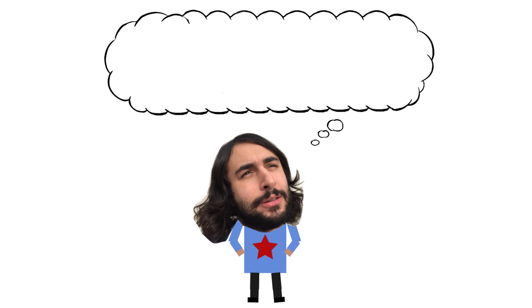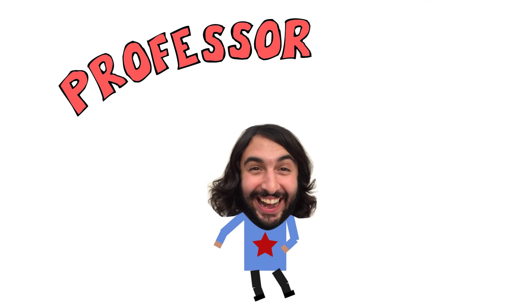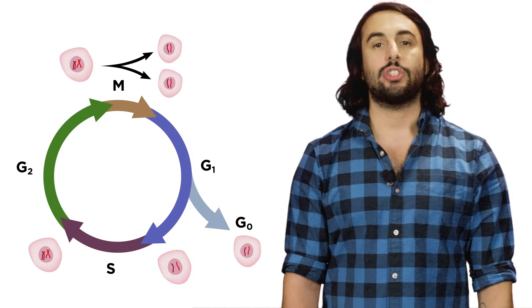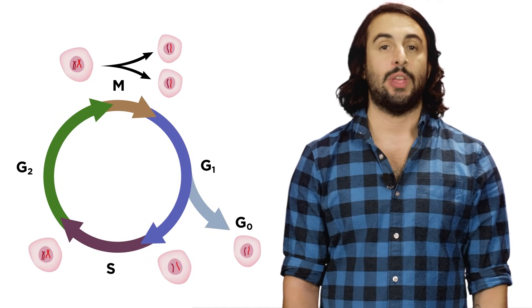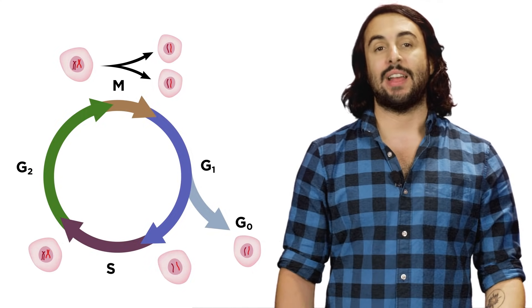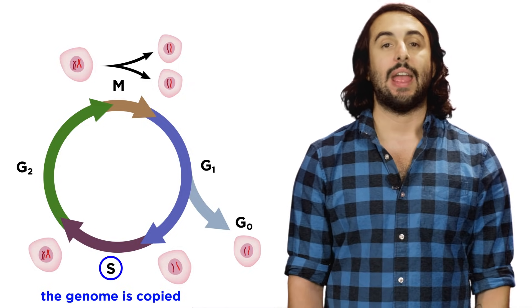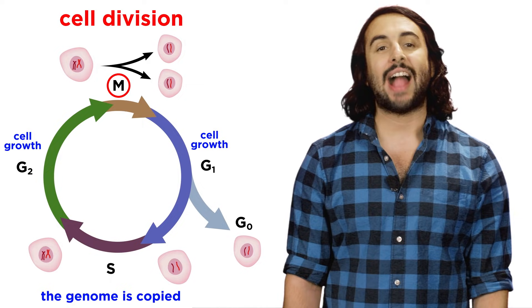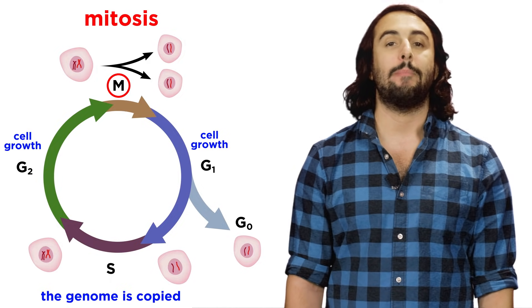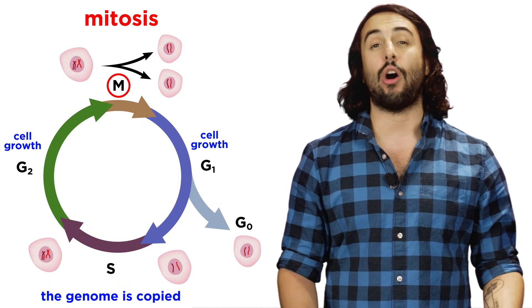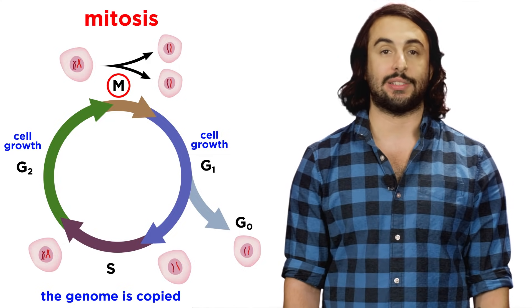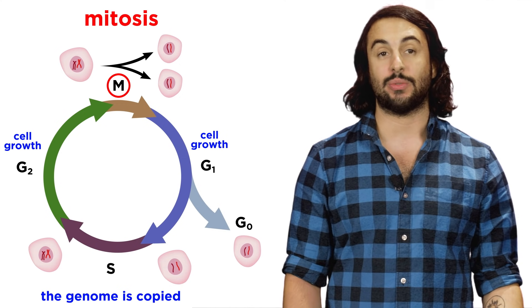Hey, it's Professor Dave. I want to tell you about mitosis. We know about the cell cycle, which means we understand that cells copy the genome and grow in preparation for cell division. The actual process of cell division, which is called mitosis, is happening all over your body right now, and it's quite complex, so let's take a look at how this works.